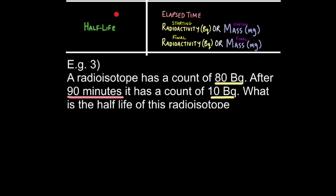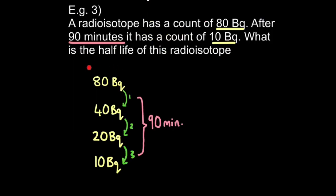In my third and final example, you may have to calculate the half-life itself. Here you'll be given the elapsed time, how much time has passed, the starting radioactivity or mass, and the final radioactivity or mass. For example, a radioisotope has a count of 80 becquerels. After 90 minutes, it has a count of 10 becquerels. What is the half-life of this radioisotope? So we have the starting and the final radioactivity, and we have the elapsed time, how long it took to get from one to the other. So we know we're starting with 80, and we know that 90 minutes has passed, and we know we end up with 10. So we just have to get from 80 to 10 by halving and halving and halving.